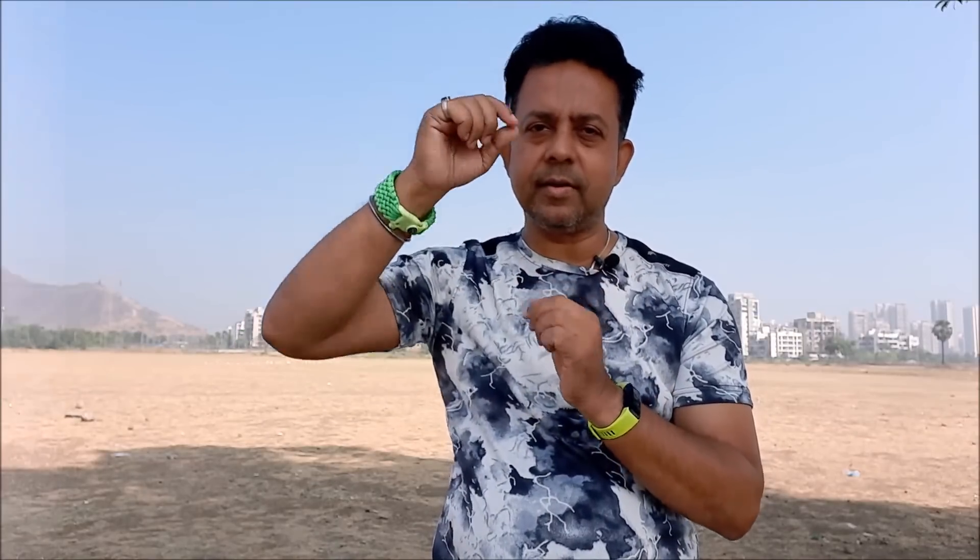Let us now see some of the major world geodesies and how they define the shape of the Earth in terms of semi-major axis and semi-minor axis.